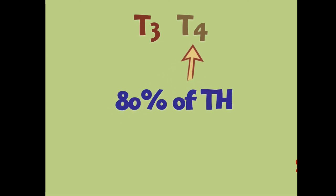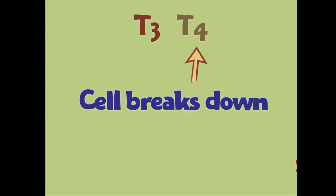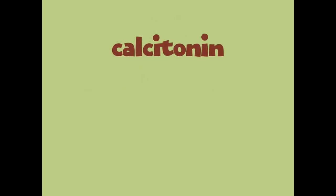Eighty percent of the thyroid hormone produced by follicular cells is T4. However, T4 is not very active in the body. Body tissues take in T4 and convert it into the more active T3 form of thyroxin.